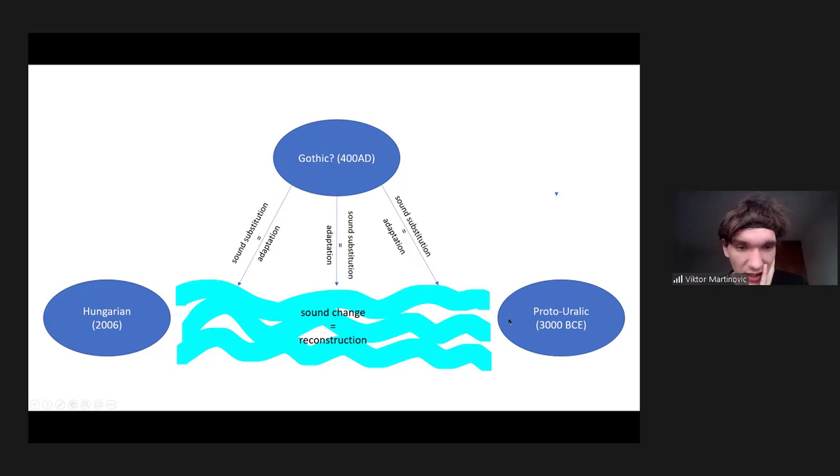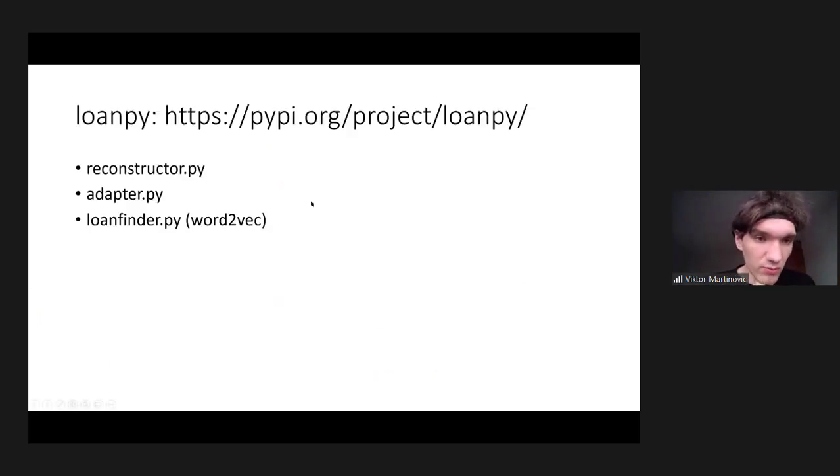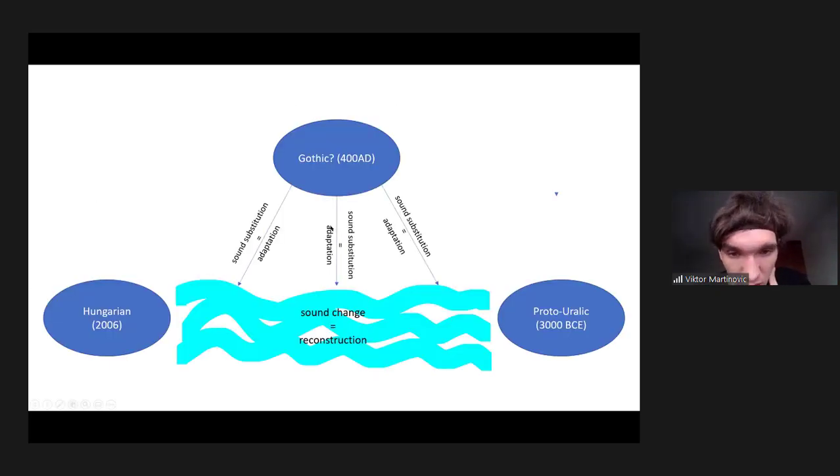I can summarize that this reconstructor module, it does exactly this, that it extracts the data from an etymological dictionary. And it tries to predict how Hungarian words where we don't know if they are old, but if we suppose that they are old, how they would have sounded based on this knowledge that we have about sound changes. So that's the reconstructor module. And the adapter module is predicting how sounds would have most likely been substituted in this proto-language and how their phonotactics would have been substituted.